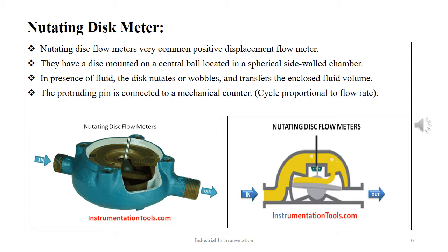The pressure of the liquid passing through the measuring chamber causes the disc to rock in a circulating path without rotating about its own axis. It is the only moving part in the measuring chamber. A pin extended perpendicularly from the disc is connected to a mechanical counter that monitors the disc rocking motion. Each cycle is proportional to a specific quantity of flow.